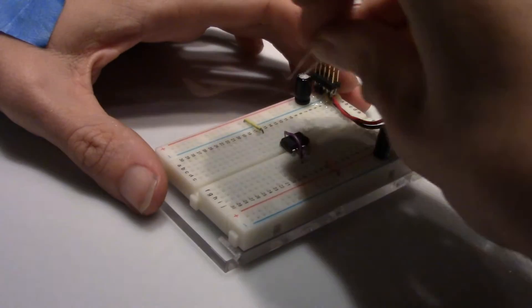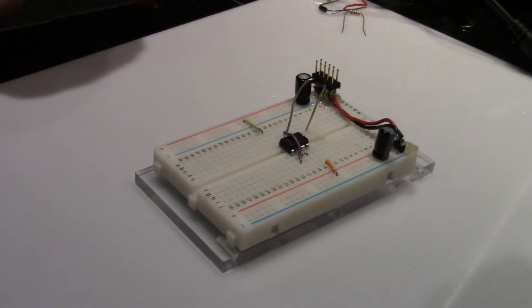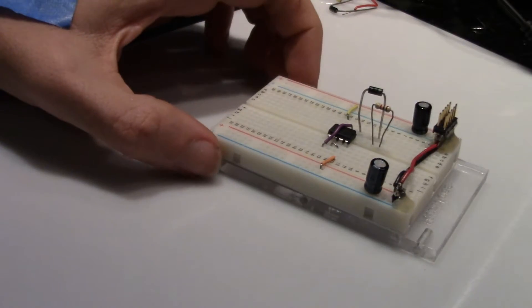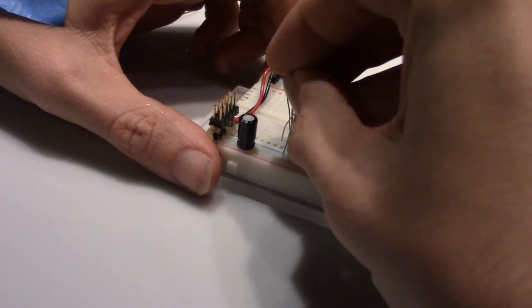Next add a diode from pin 1 to an open bus. Then a 1kohm resistor from that bus to another open bus. Now a 22 microfarad capacitor from the 1kohm resistor to ground.